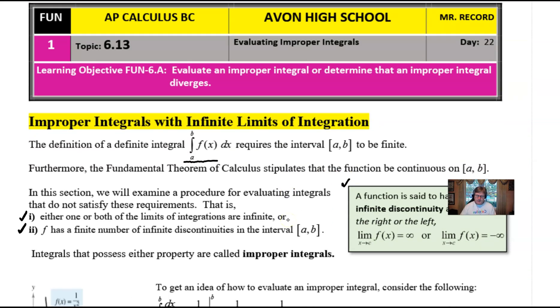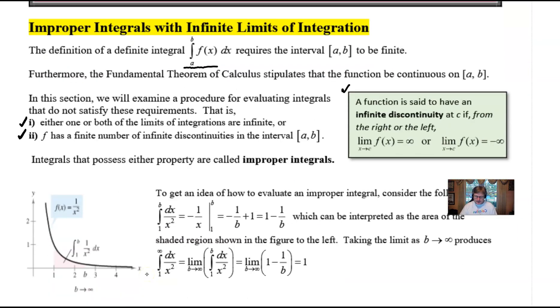Integrals that possess either of those properties are called improper integrals, and they have to be handled a little bit differently than your normal definite integrals that you've studied before. So, as you can see here, to get a better idea of how to evaluate an improper integral, let's consider the following problem that we just discussed. That integration of 1 over x squared with respect to x. Well, notice that I could integrate that from 1 to some undisclosed upper boundary that maybe I'll call b. And I can go about my business of integrating it normally, plug in my b, and plug in my 1 and subtract.